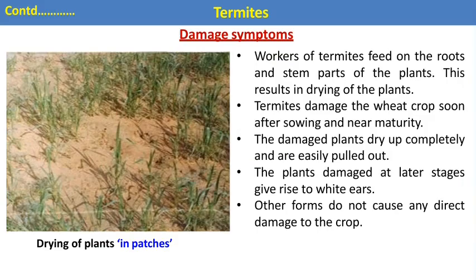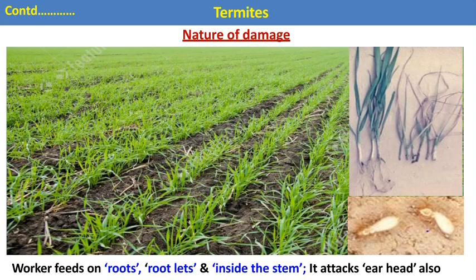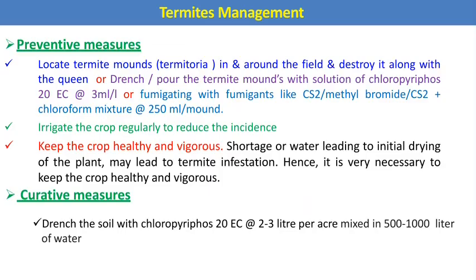In actual field conditions, the workers of termites feed on the roots, rootlets, and stem parts of the plant, resulting in drying of the plant in different patches — the characteristic symptom of termite infestation. Termites damage crops soon after sowing and near maturity. Damaged plants dry up completely and can be easily pulled out. Plants damaged at a later stage also produce white ear heads. The workers feed on roots, rootlets, inside the stem, and also attack ear heads, producing drying patches.